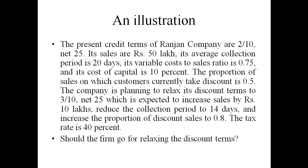Its sales are Rs. 50 lakh, its average collection period is 20 days, its variable cost to sales ratio is 0.75, and its cost of capital is 10%. The proportion of sales on which customers currently take discount is 0.5. The company is planning to relax its discount terms to 3/10 net 25, which is expected to increase sales by Rs. 10 lakhs, reduce the collection period to 14 days, and increase the proportion of discount sales to 0.8. The tax rate is 40%.